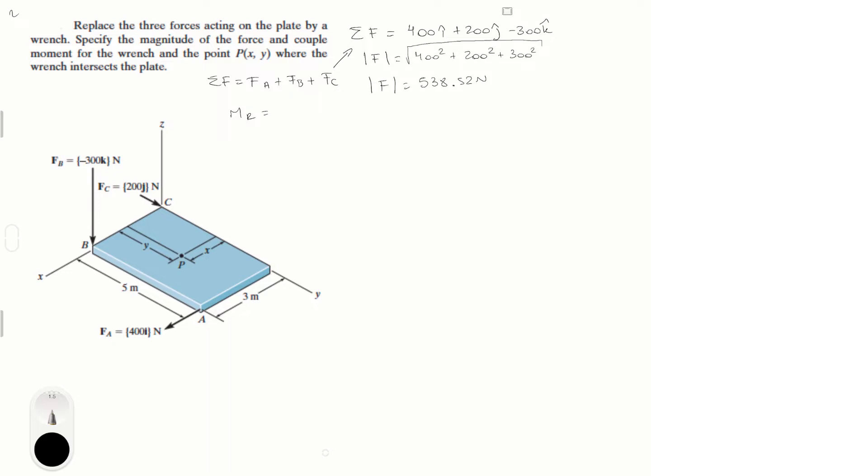Then you need to find the moment of the wrench, and this is where it starts getting a little confusing. What you need to understand is that to find the moment of the wrench, you have this point P, and then you have this vector that goes from A to P, this vector that goes from B to P, and this vector that goes from C to P.